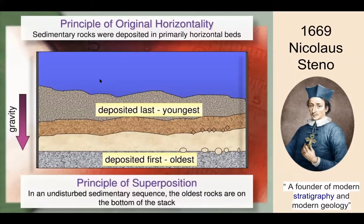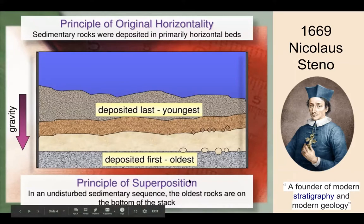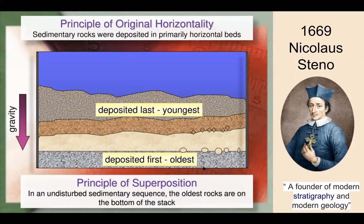Those are two easy principles: original horizontality — rock layers are horizontal, and if they're not, something must have happened such as mountain building, faults, or plate movement — and the principle of superposition, which simply states that the oldest rocks will be at the bottom of the stack.